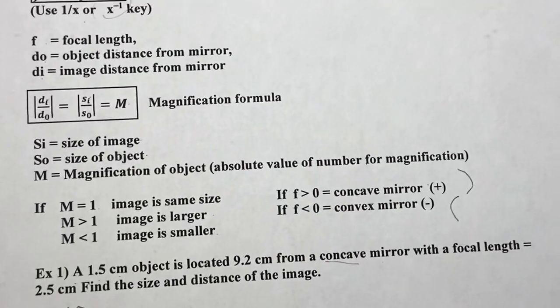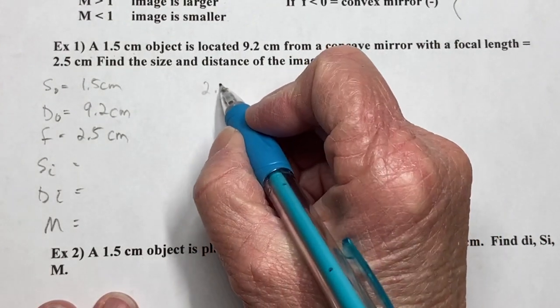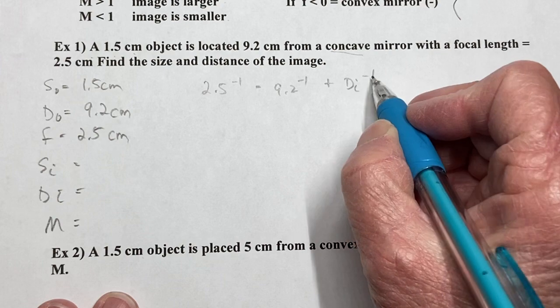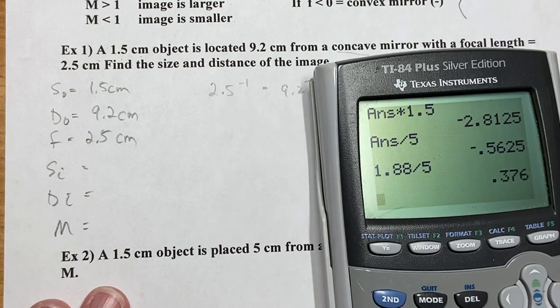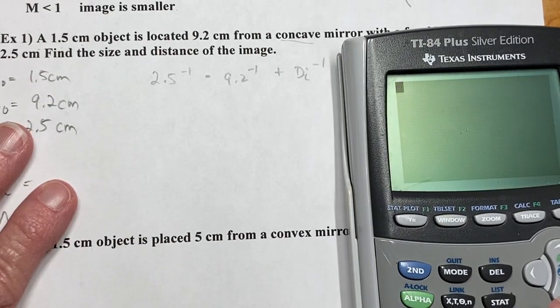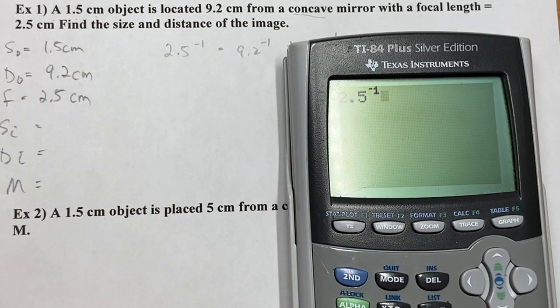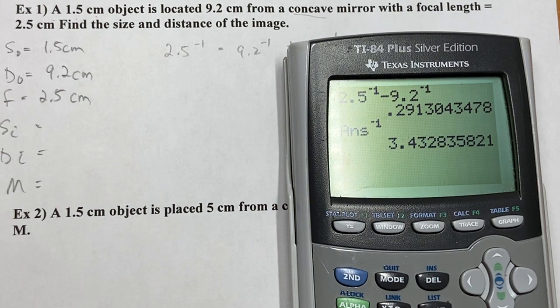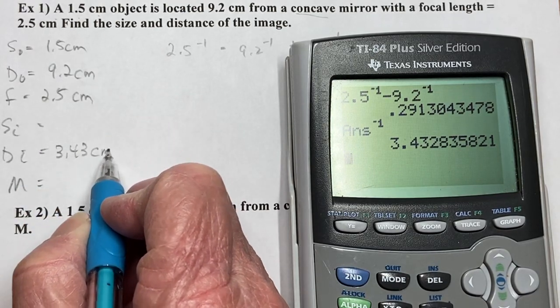All right, so I'm going to use this formula right here, starting with that one. So I'm going to have 2.5 to the minus 1 equals 9.2 to the minus 1 plus di to the minus 1. So calculator time. So I have to subtract. So I'm taking this minus this. So 2.5 to the minus 1 minus 9.2 to the minus 1. You're going to have to add equals, and then you need to take your answer to the minus 1 again, and you're going to get 3.43. So we're going to go over here.